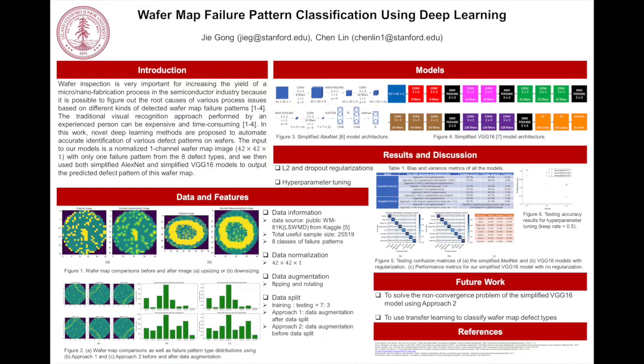The other issue for this dataset is that its distribution is highly imbalanced. So we applied image flipping and rotation for data augmentation. As for the training and testing data splitting, two different approaches were used. Approach 1 is first augmentation and then splitting. Approach 2 is first splitting and then applying data augmentation only on the training sets. Compared to Approach 1, Approach 2 excludes the augmented data from testing, which may produce a more accurate evaluation for the model.